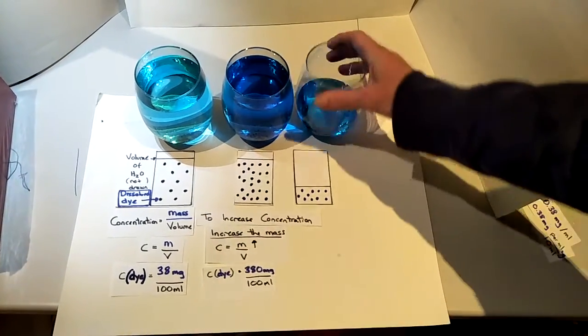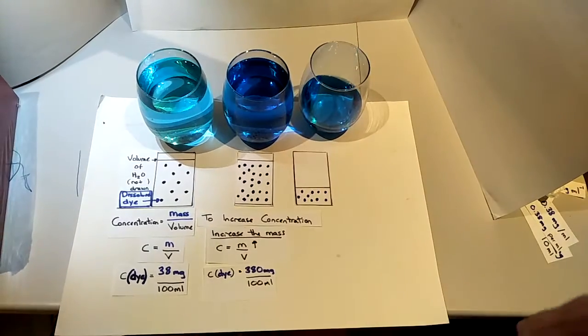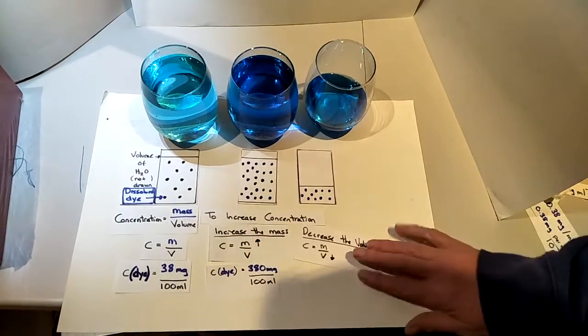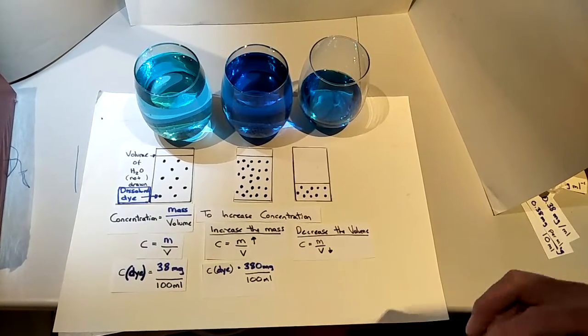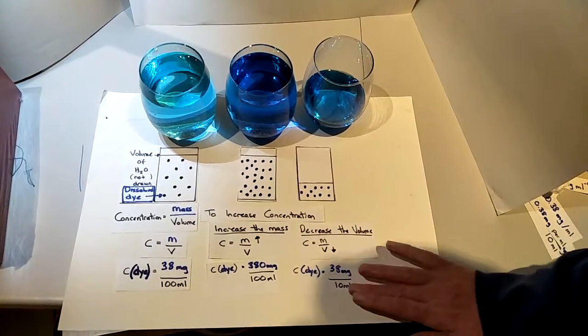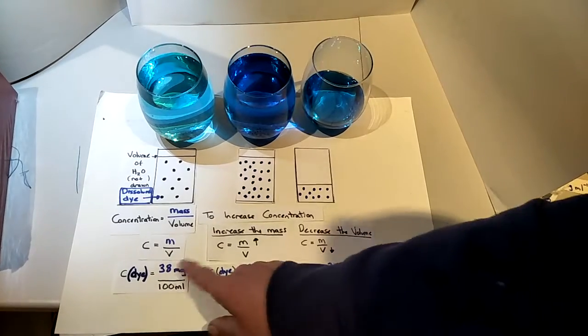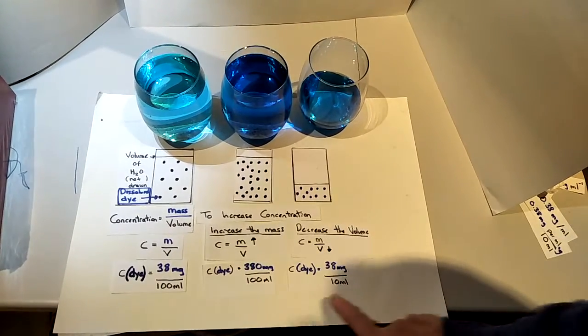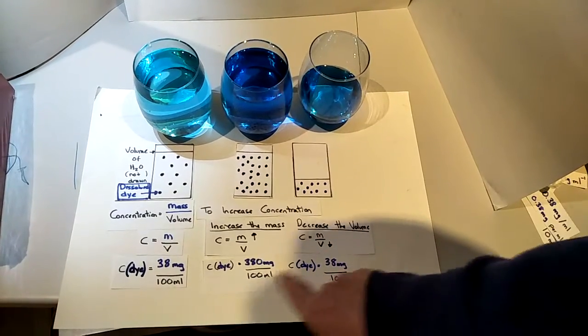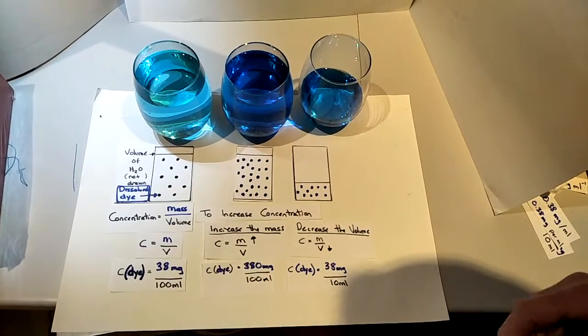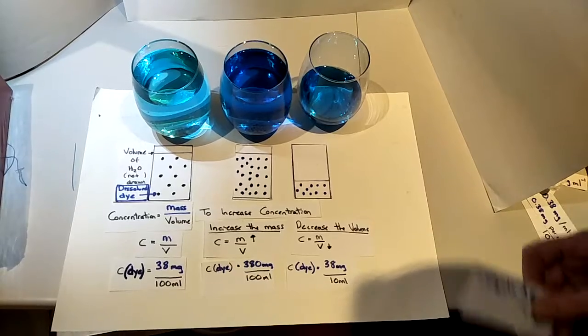So if you decrease the number on the bottom, then it increases the overall fraction and increases the concentration. So here, instead of this number going up, I've made the 100 mils go down. So to see that these concentrations are higher than those concentrations...